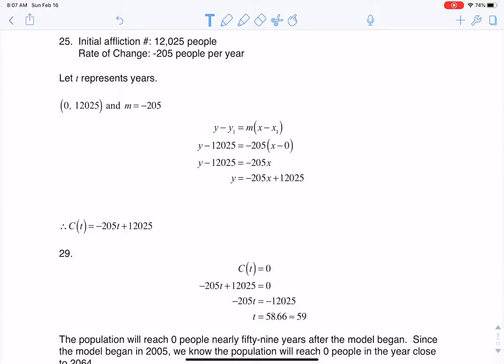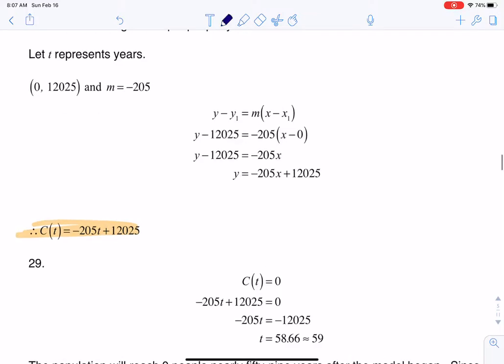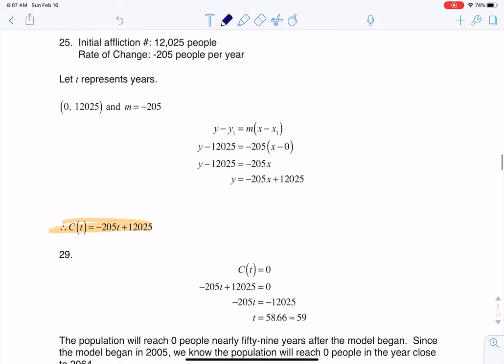So to be specific, in 29 we're being asked when will an output reach 0, but we need to use the function that we built in 25, which is right here. So we have this c of t equaling negative 205t plus 12,025, where c is the number of people. Let me shrink that a bit. This is the number of people infected with the common cold.